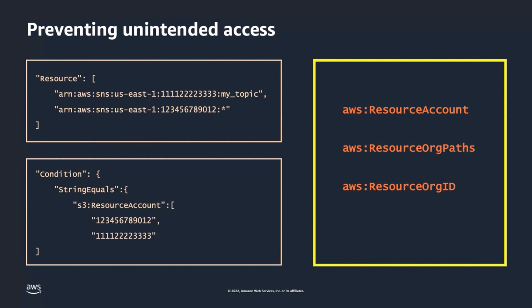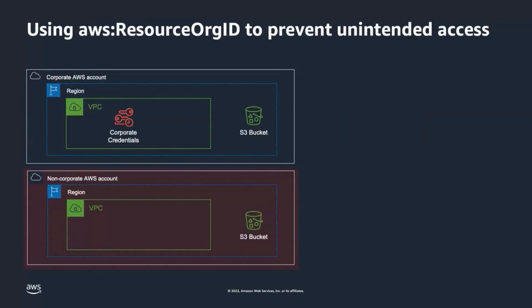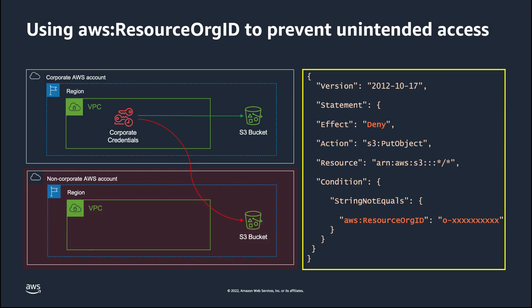AWS Resource Org ID condition key specifically is beneficial for multi-account environments, as it allows you to build a boundary at the level of an entire organization. Consider a scenario where you want to prevent your principals from writing to an S3 bucket that is outside of your organization. To accomplish this, you can write a policy which includes the AWS Resource Org ID condition key with the value set to your AWS organization ID.